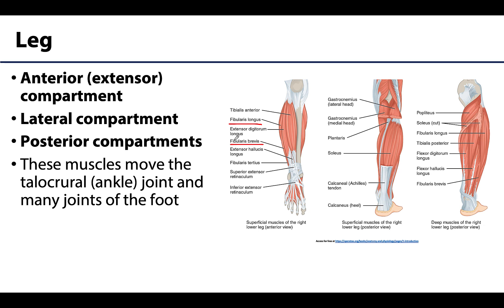The anterior extensor compartment is a bit more laterally placed overall but still positioned more anteriorly than the lateral compartment. You can see there is not much muscle coverage on the medial portion of the tibia, and that's why that portion of the tibia is so easily palpable.